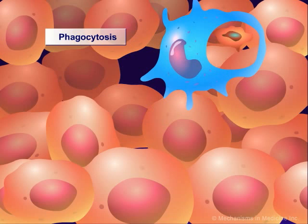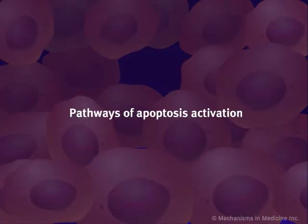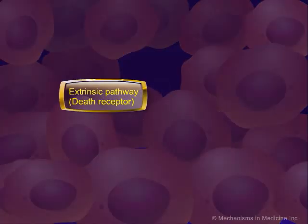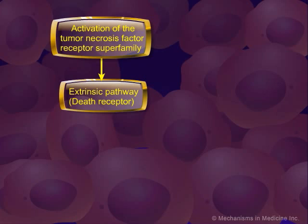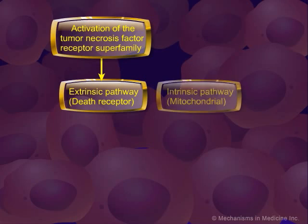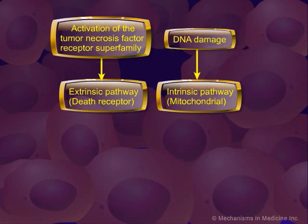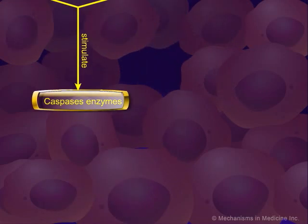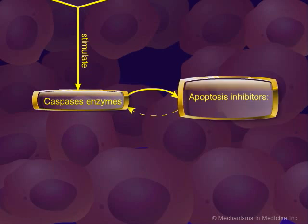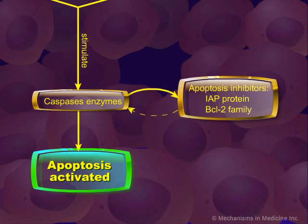The vesicles fuse with lysosome-containing proteases, and the engulfed material is processed for recycling. There are two pathways that can activate apoptosis. The first is the death receptor, or extrinsic pathway, triggered by activation of members of the tumor necrosis factor receptor superfamily. The second is the mitochondrial, or intrinsic pathway, set in motion by DNA damage. Both pathways ultimately stimulate a set of enzymes called caspases. The caspases interact with inhibitors of apoptosis proteins, or IAP, and the BCL2 family of proteins, which individually have either pro- or anti-apoptotic properties.